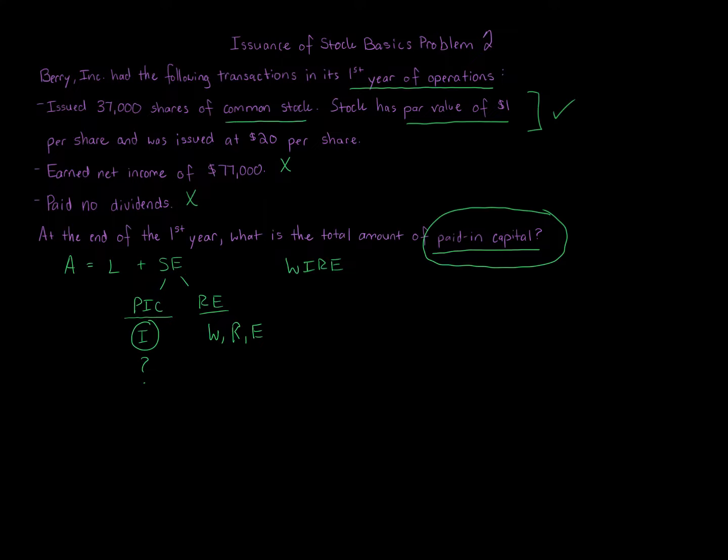The 37,000 shares times one dollar. Right, we have 37,000 shares times one dollar. And you're exactly right—the amount in excess, which would be $20 minus $1, the $20 issuance price minus one dollar for the par is $19.